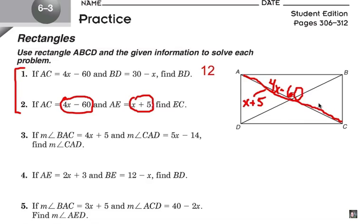Well, EC is this other part of the diagonal. The whole thing is 4x minus 60, and half of it up here is x plus 5. And so, we need to put that together in an equation, solve for x, and remember that this top part, AE, is congruent to EC. Here's what that equation would look like. Two of the x plus 5's equals the whole thing, 4x minus 60.